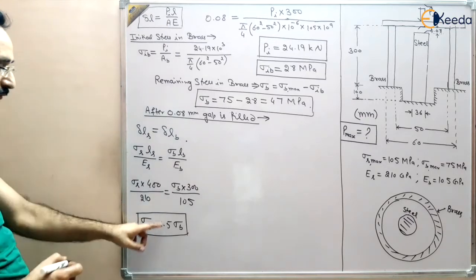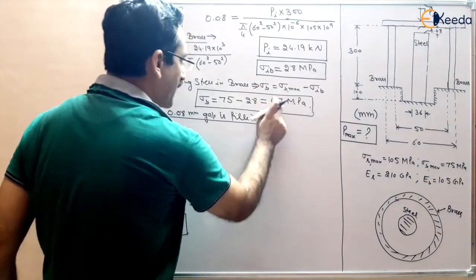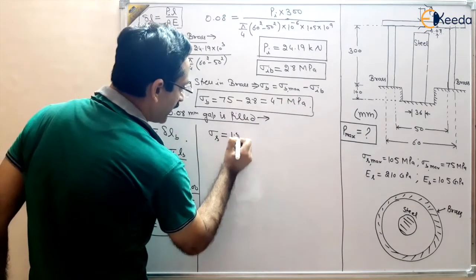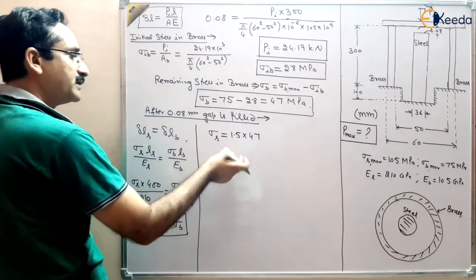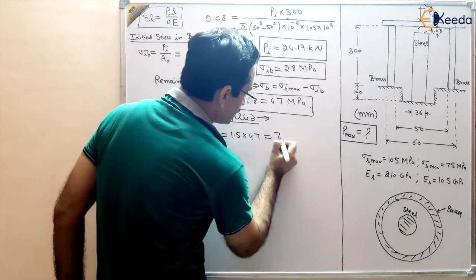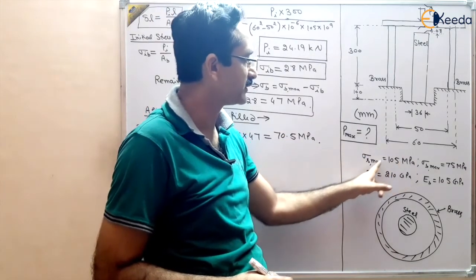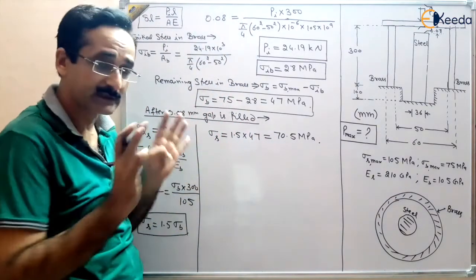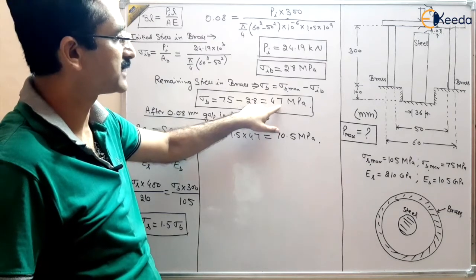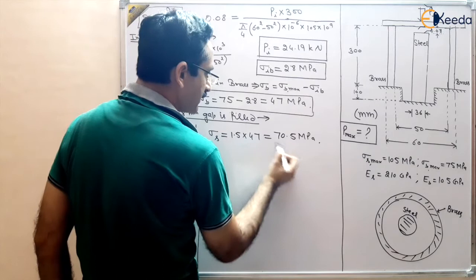If the further applied load develops 47 MPa in brass, the corresponding stress in steel is 1.5 × 47 = 70.5 MPa. Since the maximum permissible stress in steel is 105 MPa and 70.5 MPa is less than 105 MPa, steel is on the safer side — there is no problem with steel. So we can apply this load such that 47 MPa develops in brass and 70.5 MPa develops in steel.